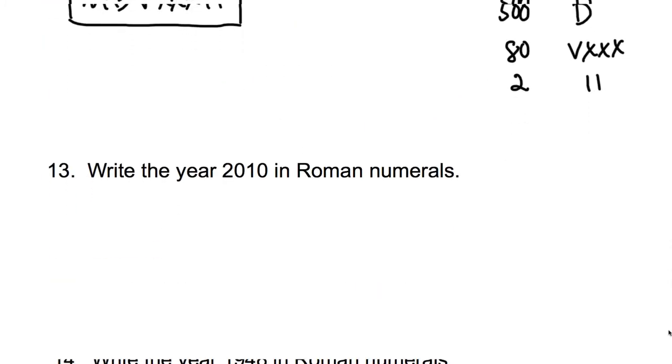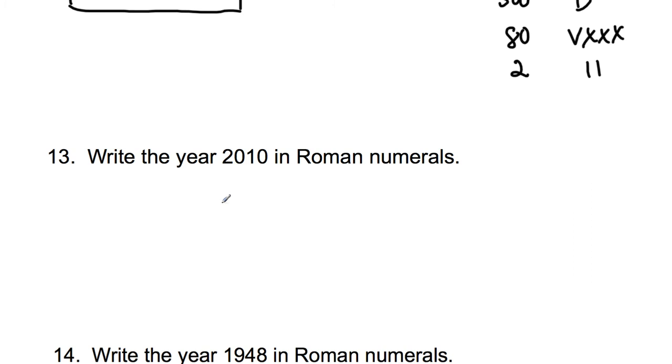How about the year 2010? 2010 in Roman numerals. I can do the 2000, and then I do, there's no 100, so I'll just do the 10. So that's 2000 is just MM, and then X. MMX, and that's it for that.